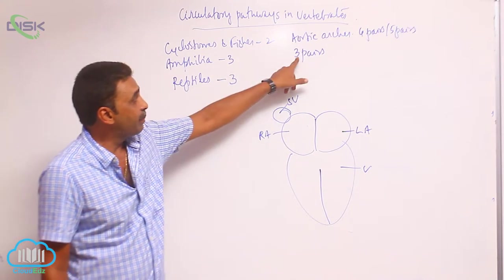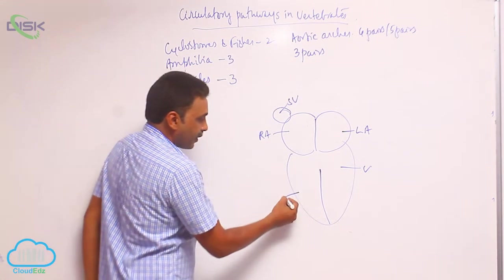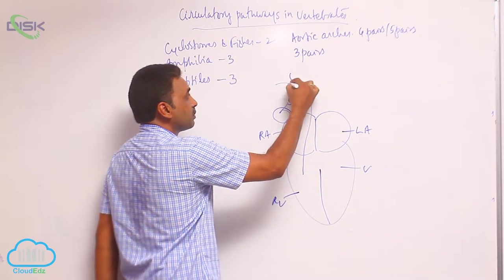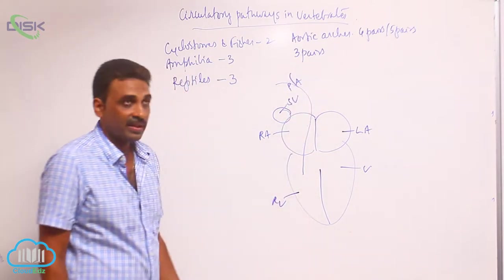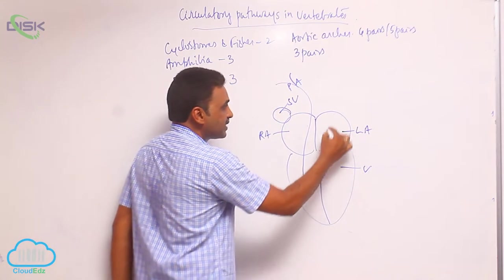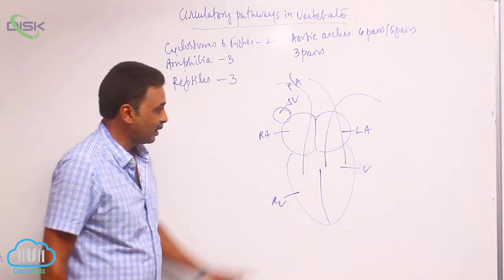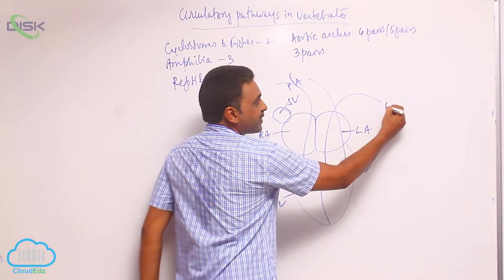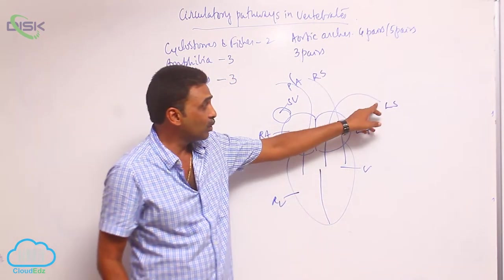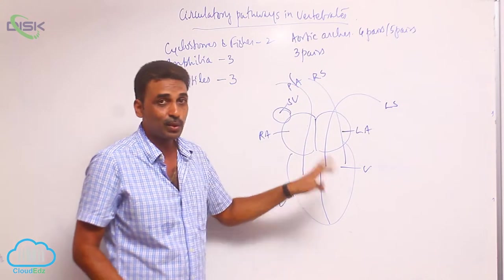The truncus arteriosus is absent. Out of the three pairs of aortic arches, only three are left. From the right ventricle you can see one pulmonary arch, and the remaining are systemics — one systemic here and another systemic here. So two systemics: this is the left systemic and this is the right systemic. We use the term left or right based on where the arch is going, not where it is originating.